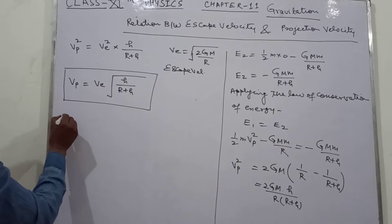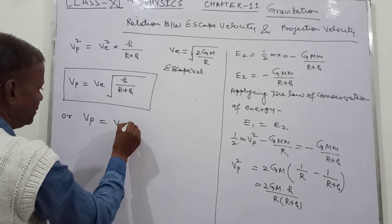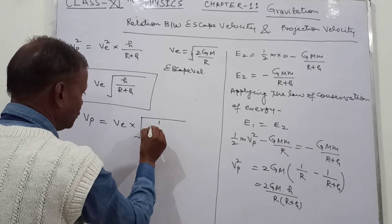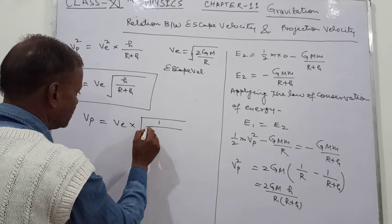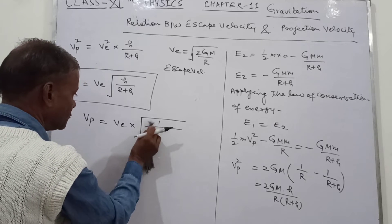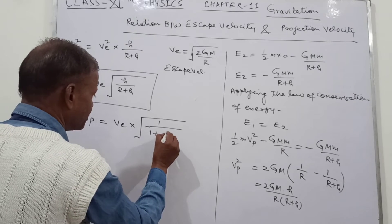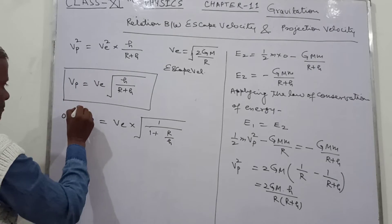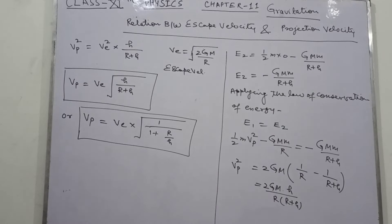So the required relation is VP equal to VE into square root of H upon R plus H, or equivalently VP equal to VE into square root of 1 upon 1 plus R upon H.